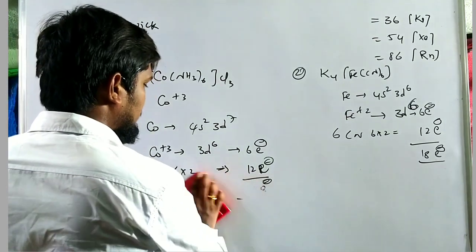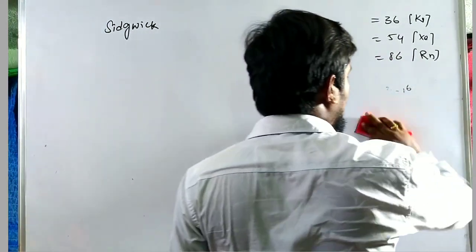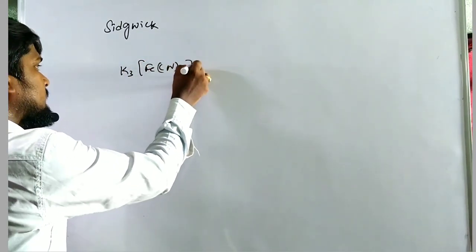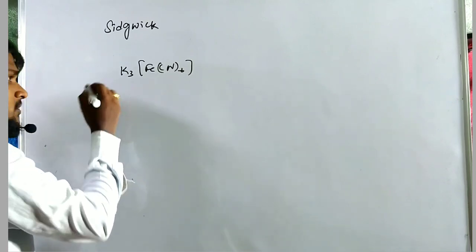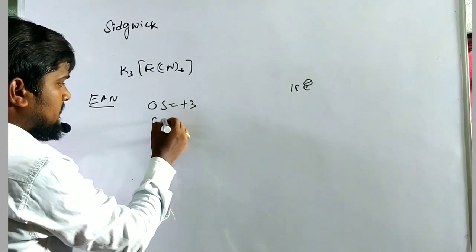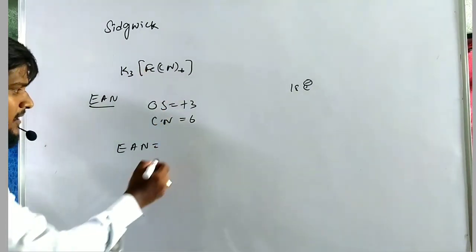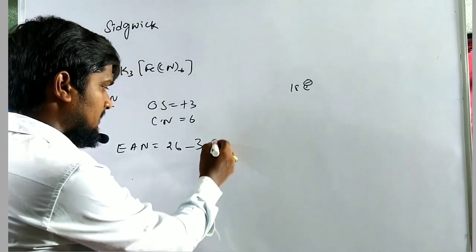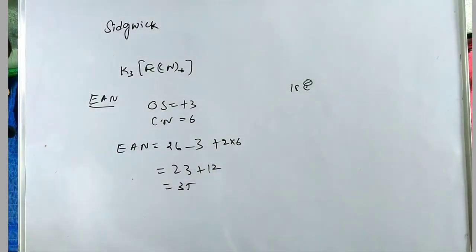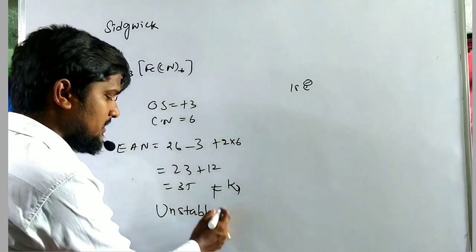Now we calculate some unstable complexes. For K3[Fe(CN)6]: the oxidation state of iron is +3 and coordination number is 6. EAN = 26 − 3 + (2 × 6) = 23 + 12 = 35, which does not equal any noble gas configuration. Therefore, this is an unstable complex.